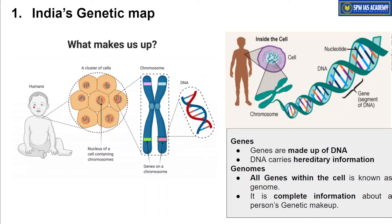Let's first look at some basics before coming to the current context. The most fundamental unit of the human body is the cell. Inside the cell, there is an important subpart called the nucleus. Inside the nucleus, there is a type of content called chromosomes. Chromosomes have an X-type structure and are made up of genes. The basic unit of genes is DNA — a double helical strand that contains genetic or hereditary materials which get transferred from parents to their offspring.